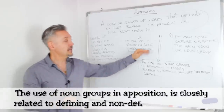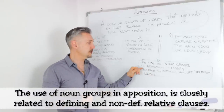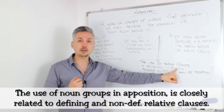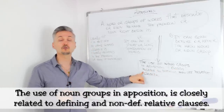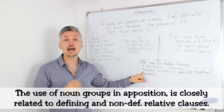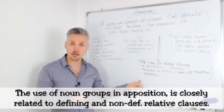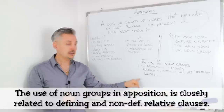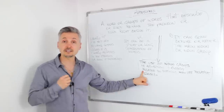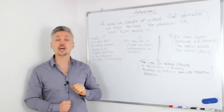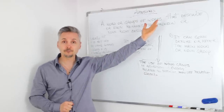The use of noun groups in opposition is closely related to defining and non-defining relative clauses. If you want to know what a relative clause is, you may watch a lesson by clicking here.